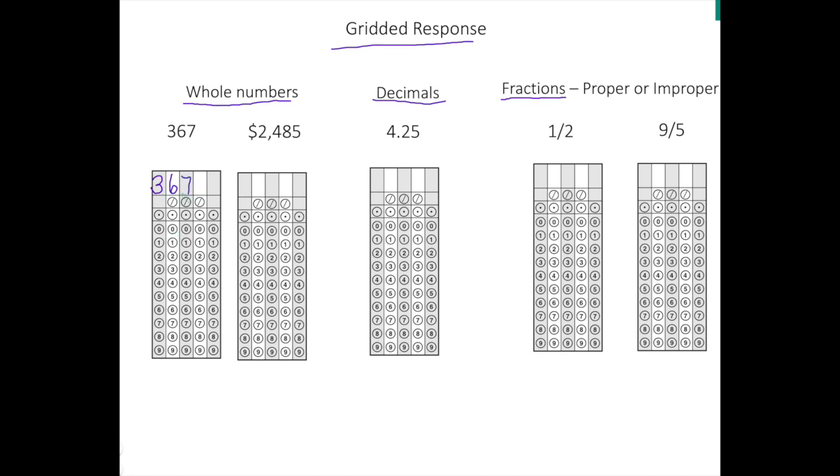Since your answer is a whole number, you do not need the fraction bar which is the second row or the decimal point which is the third row. So we're now going to shade our answer. So we're going to shade the 3 and make sure your shading is always clean. You don't want any errors. Our next number is the 6. And finally the 7. This will be considered a correct input of the number 367. You can have these empty spaces at the back. That is fine. Your answer is correct.